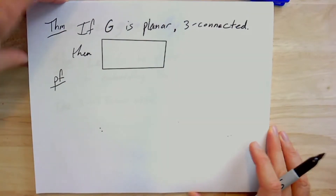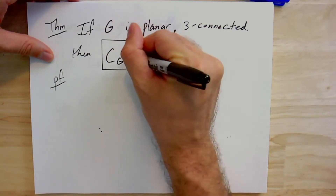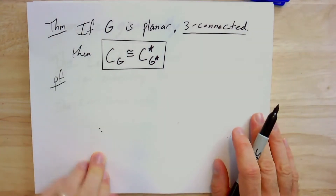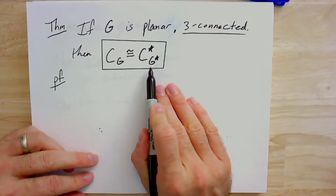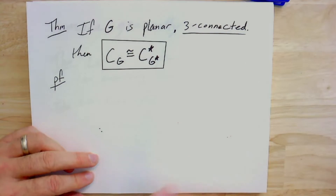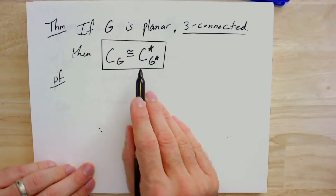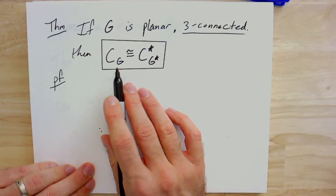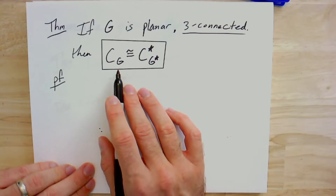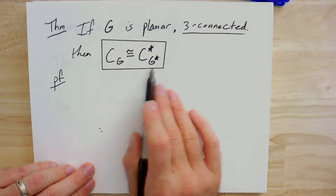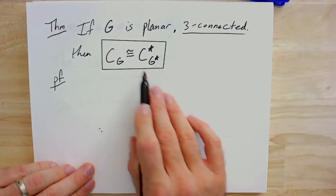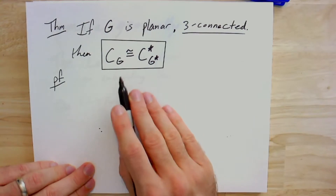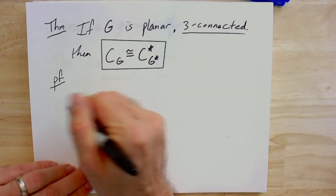If we have a three-connected planar graph, we're going to show that the cycle space of that graph is isomorphic to the cut space of its dual. We need the three-connected condition so that it makes sense to talk about the dual graph. At first, using the abstract definition of isomorphism for vector spaces might seem like we need to find explicit linear maps — and we can do that, writing down the relationship between cycles in the graph and cuts in the dual. But there's a really direct way: just show the two vector spaces have the same dimension.